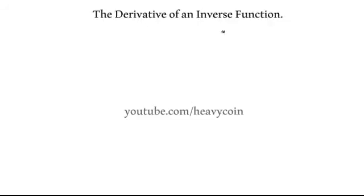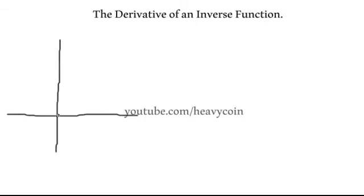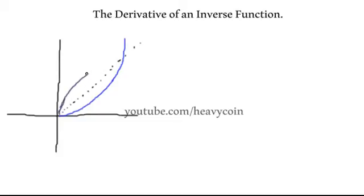In this section we're going to be finding the derivative of an inverse function and evaluating it at a point. The first thing I'm going to do is draw up a picture. We're going to label this as our function f of x and then with a different color we're going to label this as our inverse.